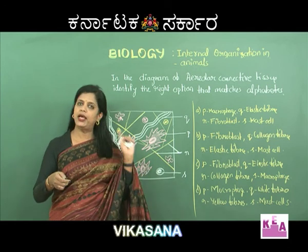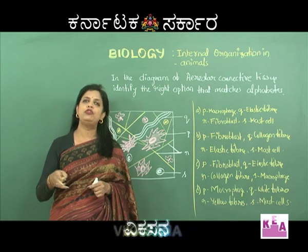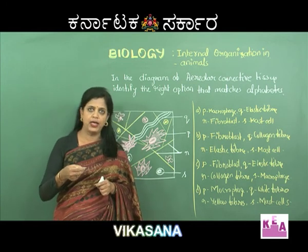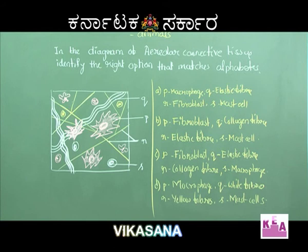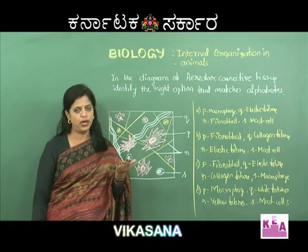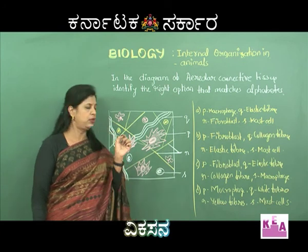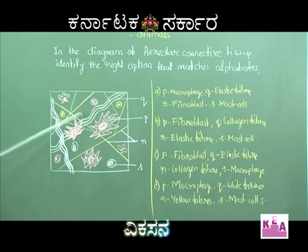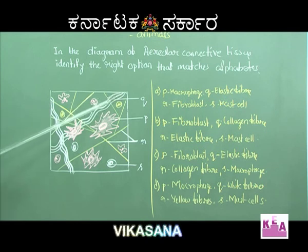Coming to areolar connective tissue - the diagram is given. You are supposed to identify what are the right alphabets that represent the right parts. In the diagram of areolar connective tissue, identify the right options that match the alphabets. The free spaces you see are showing the matrix, and you can see the wavy fibers.